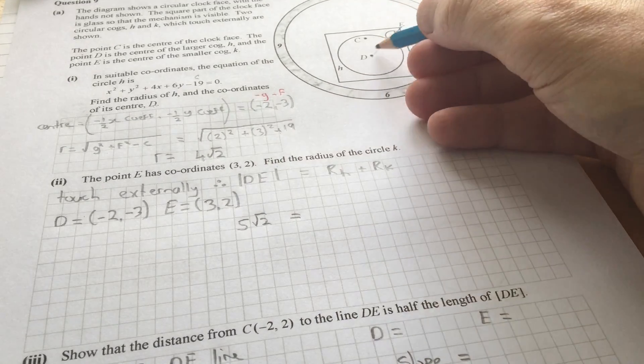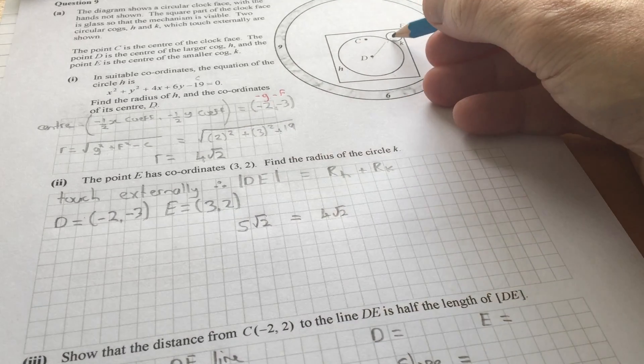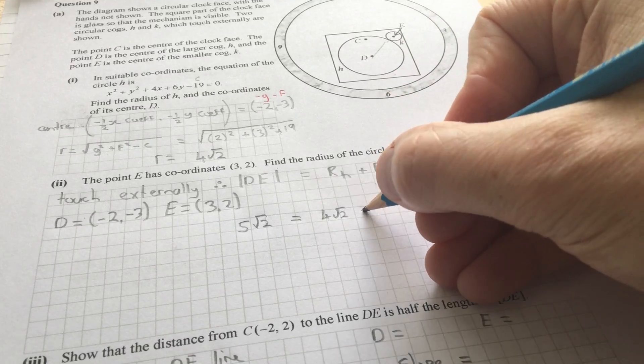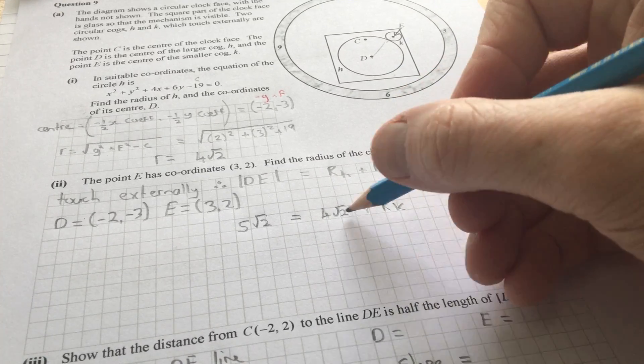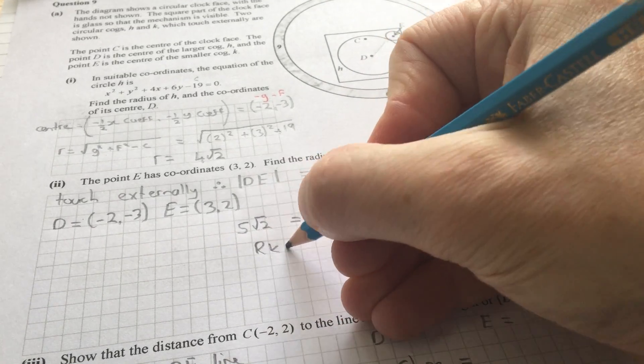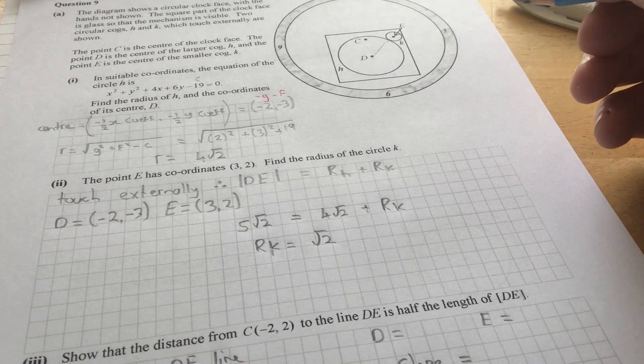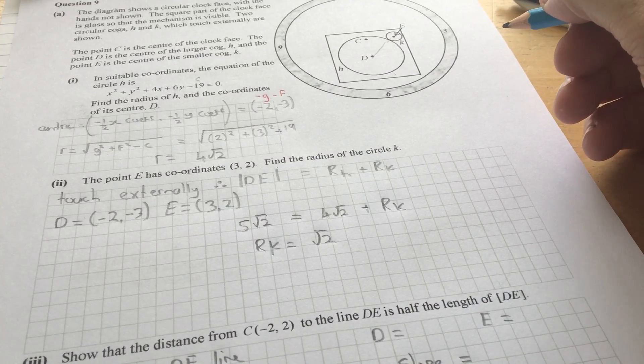So, D is 5 root 2. Now, the radius of the circle H is here, 4 root 2. And we have to find the radius of the circle k. So, what is the radius of the circle k? So, it's just 5 root 2, take away 4 root 2. So, the radius of the circle k will be equal to root 2. So, I hope there was no issues there.